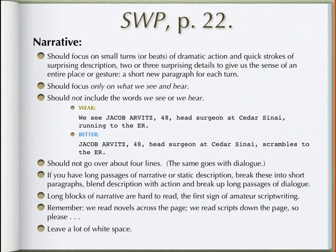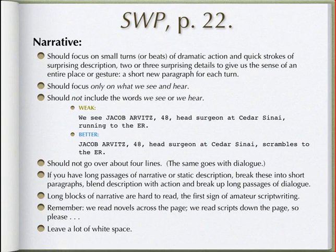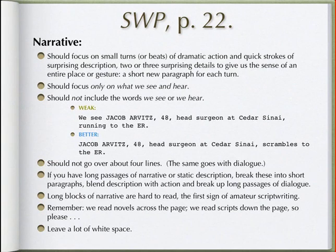Don't interpret actions for us. For example, if you write that Jacob Arvitz is nervous, rewrite to show us how. If you write that he drums his fingers on his desk, you're writing a cliché detail for nervousness. Try to find something surprising — what does this individual character do to show nervousness? Pluck at his eyebrows? Rub the stubble along his neck? Pull at his earlobes? Invent something we've never seen before, particularly for this particular character. And please, even though you may see it written in a few sample scripts, don't write 'we see' or 'we hear' — it's a sign of amateur screenwriting.